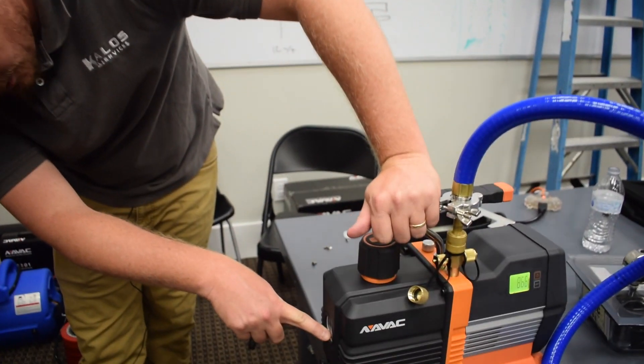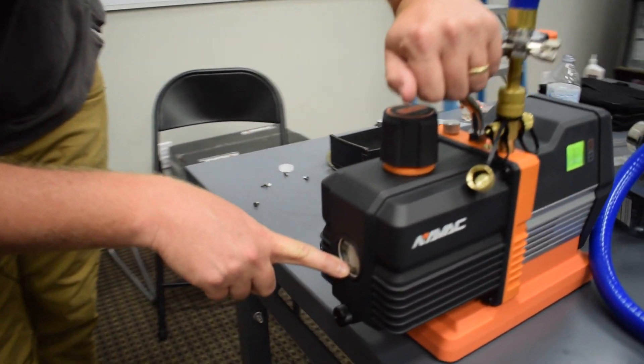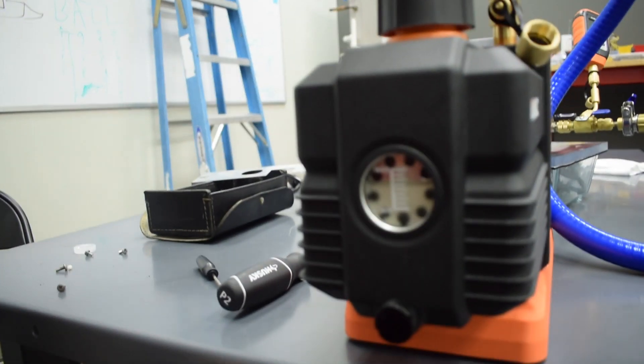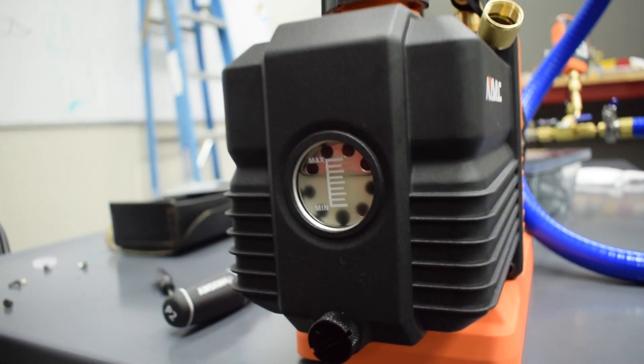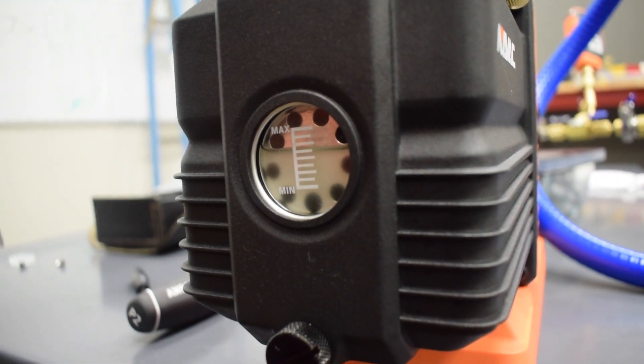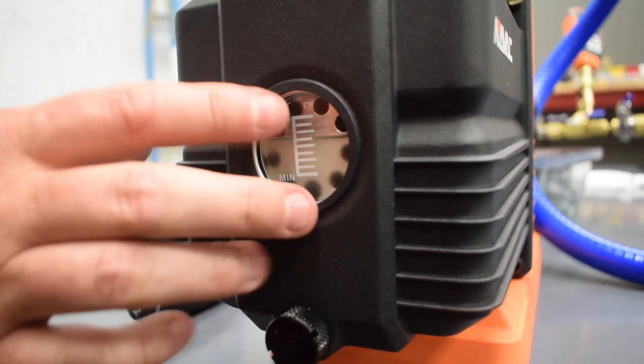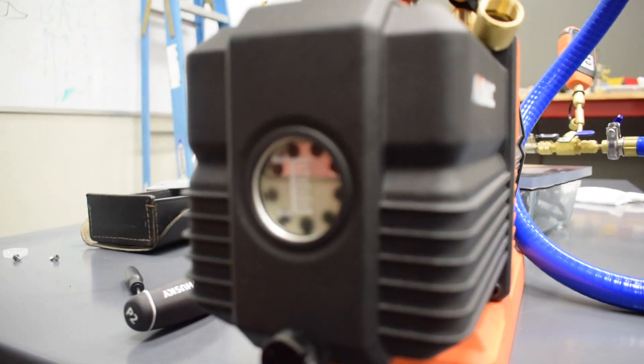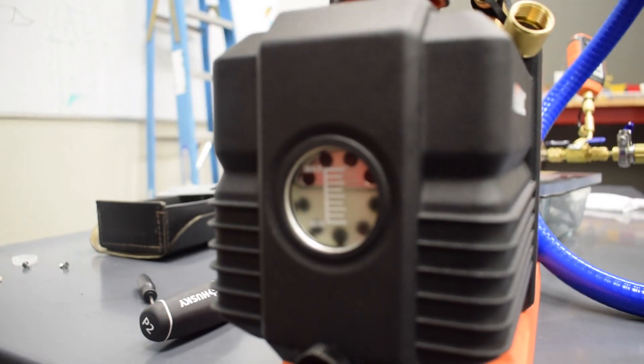If you look right here, even with that small amount of moisture, we already have some fouling of the oil. The oil is a little bit creamy there. You saw how clear it was before. That gives you an indication of how small amount of moisture can show up in your vacuum pump oil. On a typical system, those few drops I had were enough to foul your oil in your vacuum pump.